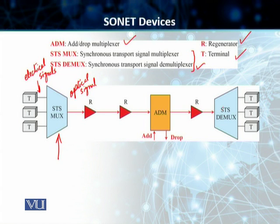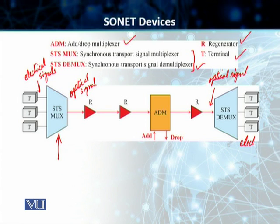The DMUX does the same role in reverse. It actually receives the optical signal at the end of the SONET line, and it demultiplexes this signal into the corresponding electrical signals, which are then transported to the end-user terminals — our destinations.